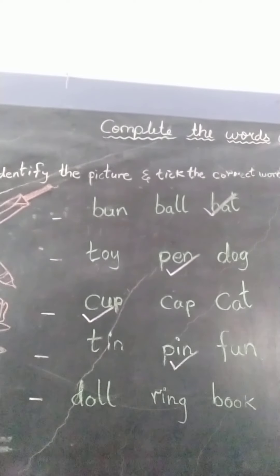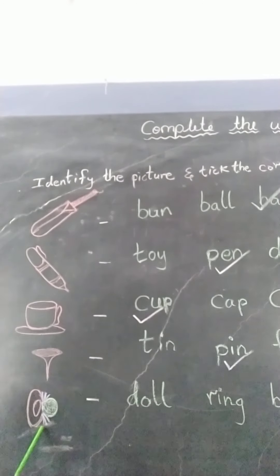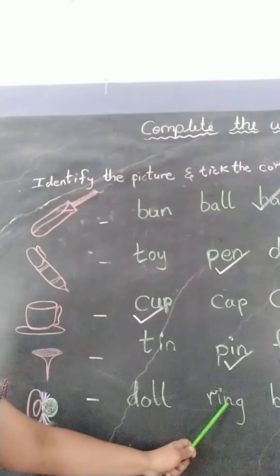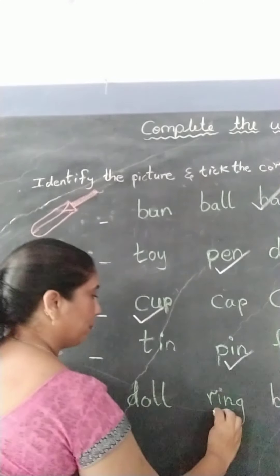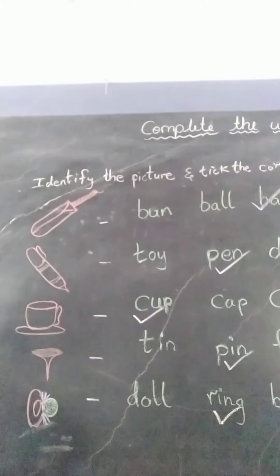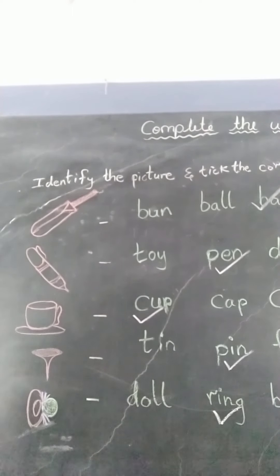So the picture is a ring. The spelling of ring is R-I-N-G, ring. So tick the spelling of ring. So children, learn to tick the correct words — the spellings of the pictures given. Thank you.